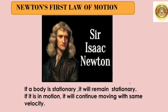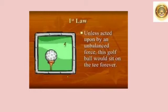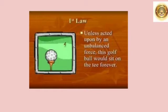Now, let us study this using some examples. Unless acted upon by an unbalanced force, this golf ball would sit on this tee forever. Unless you strike this ball with a force, it will continue to remain in this state. In the absence of any external force, a body continues to be in a state of rest or of uniform motion along a straight line. This simply means that things cannot start, stop or change direction all by themselves. Every body will continue to do what it is doing — if it is at rest, it will remain at rest, and if it is in motion, it will stay in motion. Only an unbalanced force can change this.